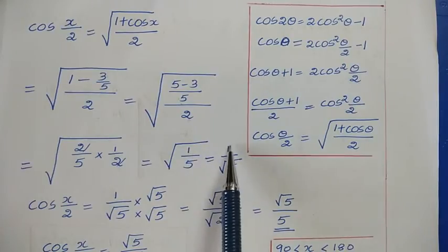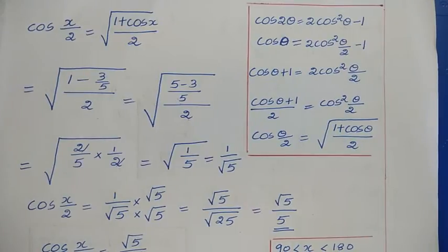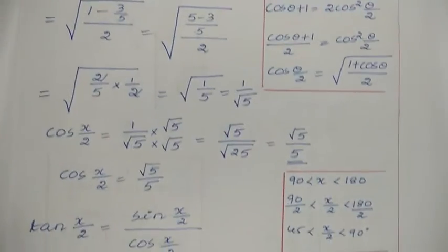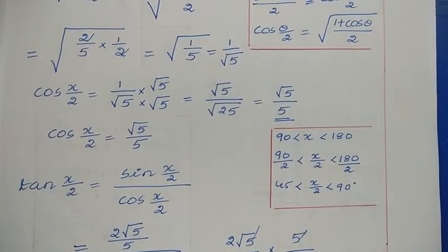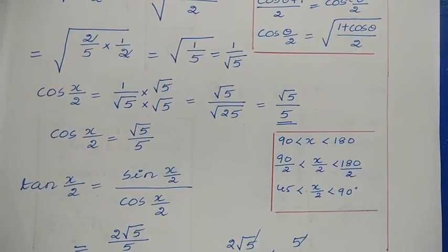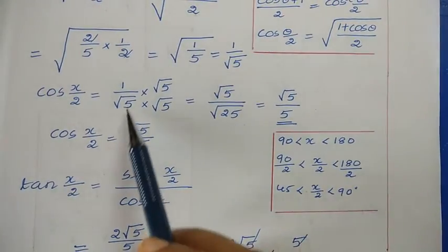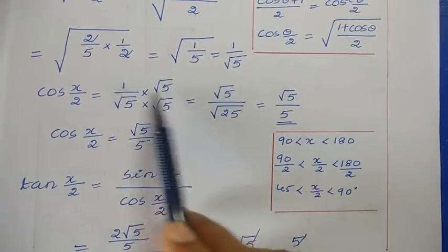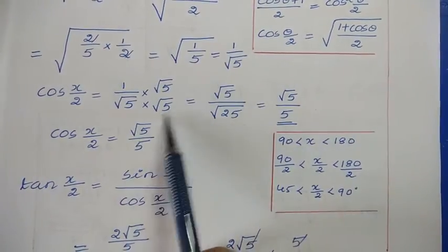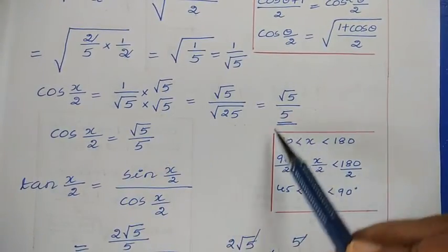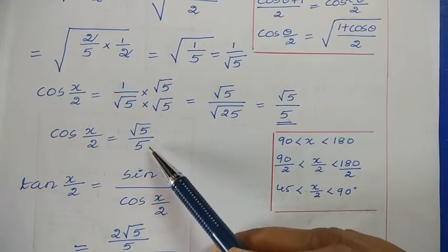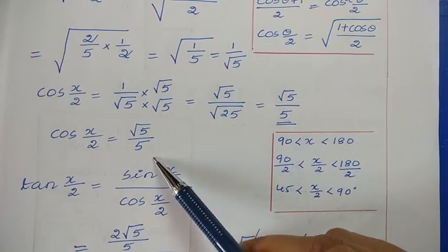Again, there is a square root in the denominator, so rationalize: multiply by √5/√5, giving √5/√25 = √5/5. So cos(x/2) = √5/5.